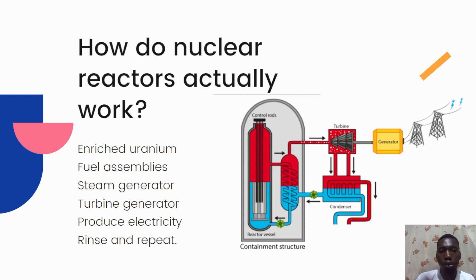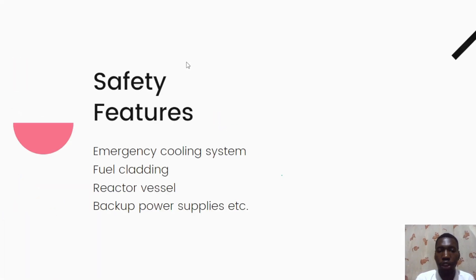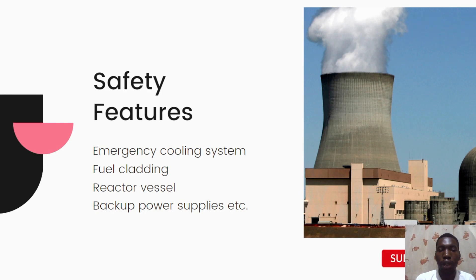There are safety issues to consider concerning nuclear reactors. To prevent the release of radioactive materials into the environment, nuclear reactors are equipped with a number of safety systems and features. These include physical barriers such as the fuel cladding and the reactor vessel, as well as redundant backup systems such as emergency cooling systems and backup power supplies.